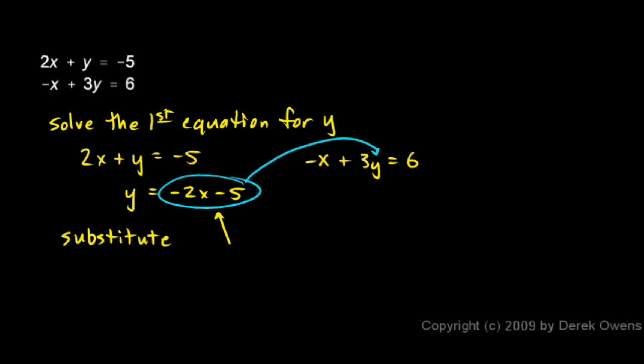So I have -x + 3y = 6. And now you can see what has happened: I now have an equation with no y in it. That substitution has eliminated a variable. So now I have an equation with one variable and I can solve this.